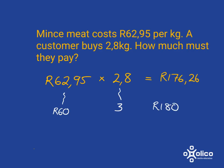And if I go and put it in my calculator, I get 176,26. But having a sense that it should be close to 180 means that if I push the wrong button and come up with an answer like 17,26, I would know that something isn't right here. So this kind of estimation is a very useful skill to have.